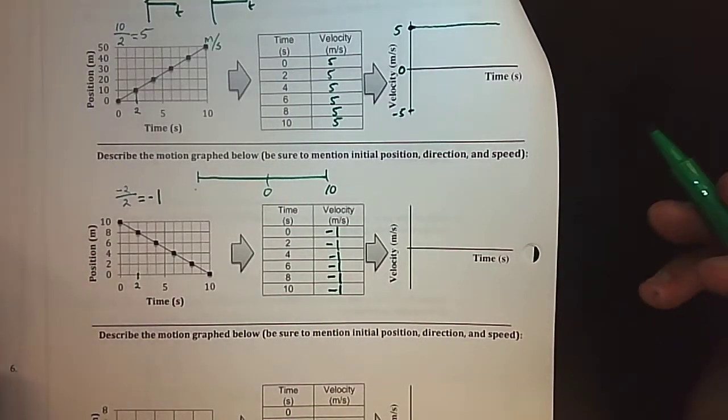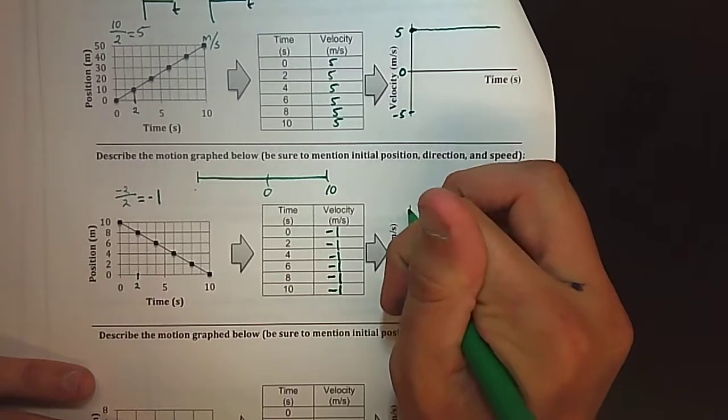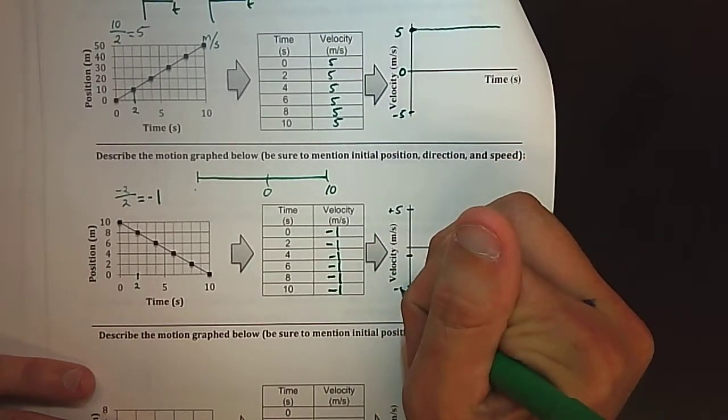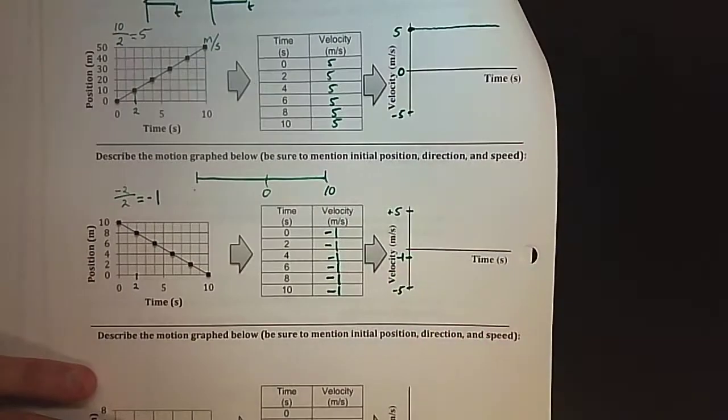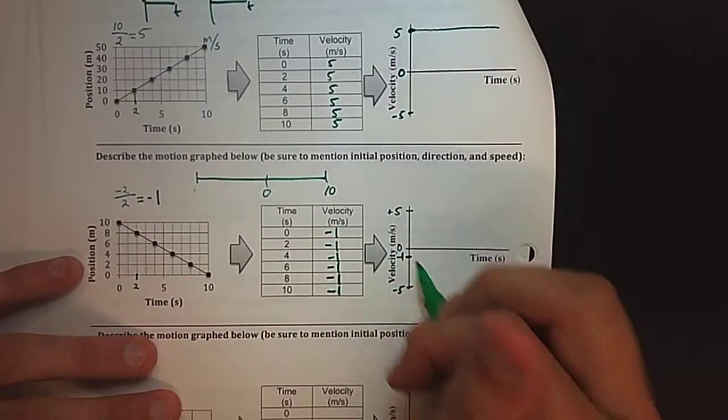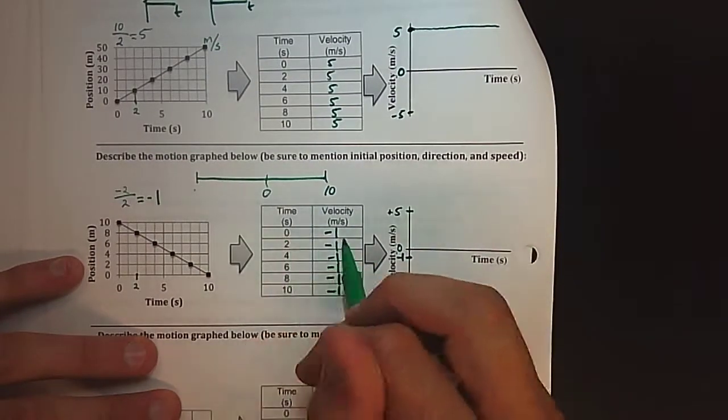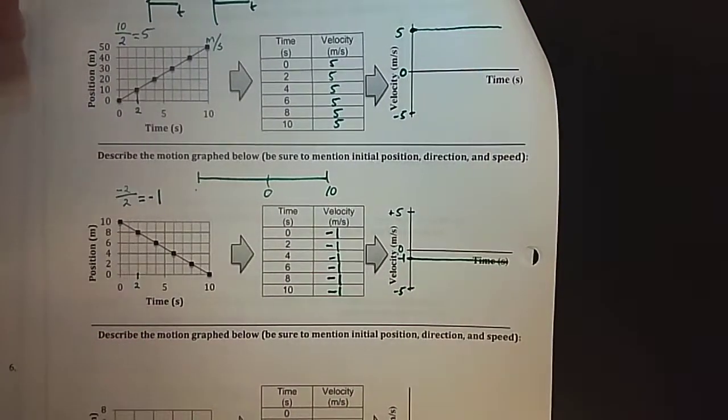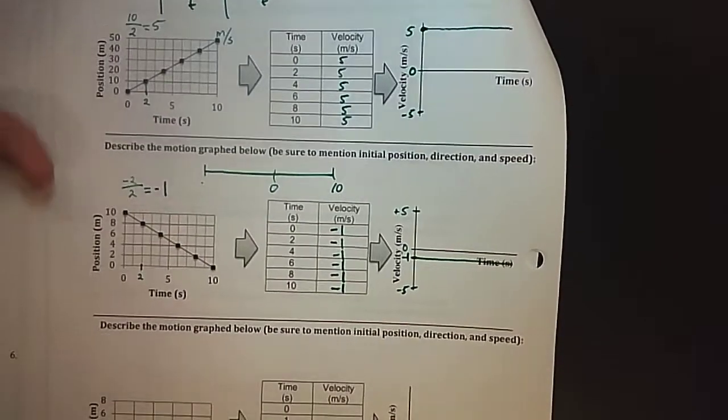So if I'm going to graph this, well if this was negative five, my negative one would be somewhere here. My origin being there, at time zero my velocity is negative one and as time increases my velocity remains at negative one so you get something like that.